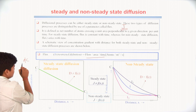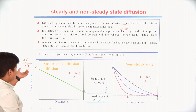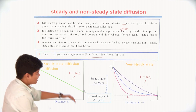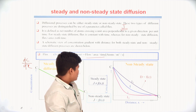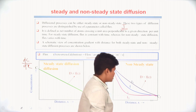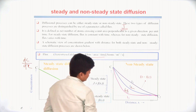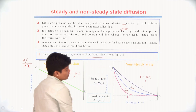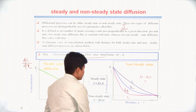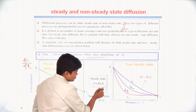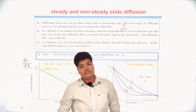The concentration gradient dC/dX is the difference between two concentrations divided by position dX. In steady state diffusion, the concentration gradient is constant with time — it follows a straight line. In non-steady state diffusion, at different time intervals t1, t2, and t3, the concentration gradient is not the same; it changes with time, meaning the concentration gradient is dependent on time.